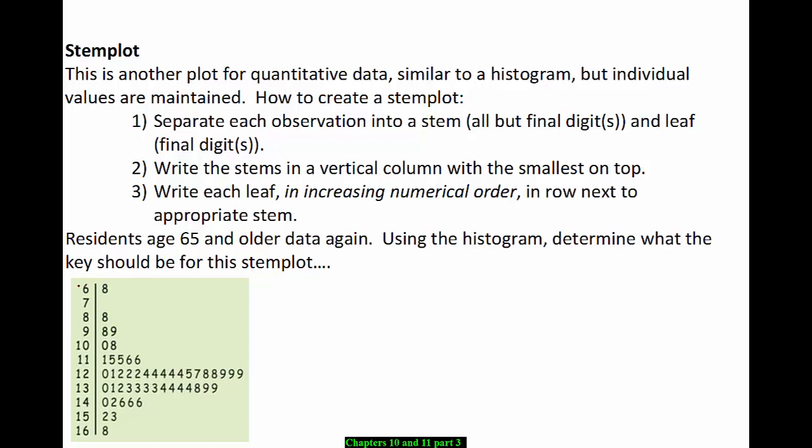Notice that in the histogram that we just looked at, there was a bin that we called a possible outlier, and it was in the 6 to 7 range. Well, that's this observation right here.